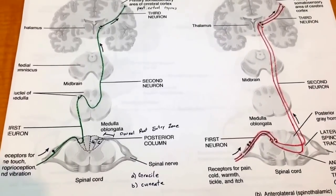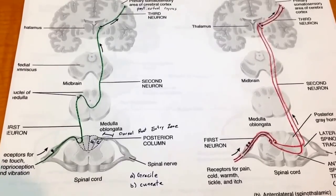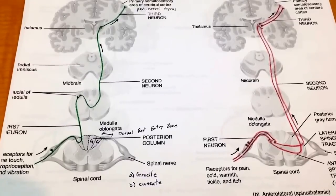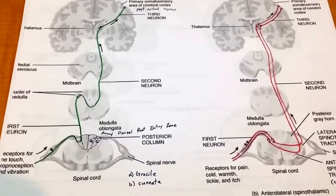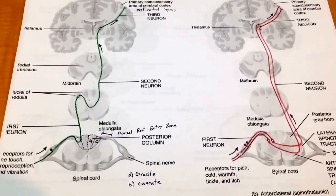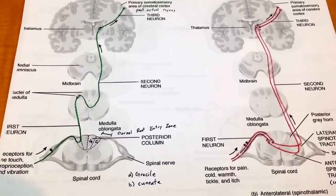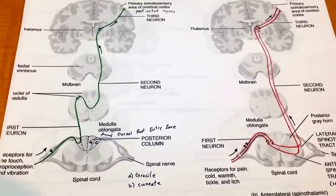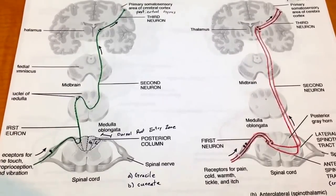The spinocerebellar tract carries unconscious proprioceptive information and also has two pathways, but we're not responsible for knowing those on this test — they're a bit complicated and could cause confusion. So those are the three pathways: the corticospinal pyramidal tract, the dorsal column medial lemniscal system, and the anterolateral system, along with all their subdivisions. Hopefully that helped — good luck.